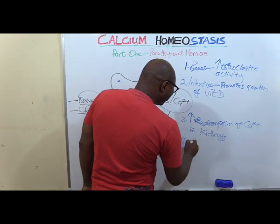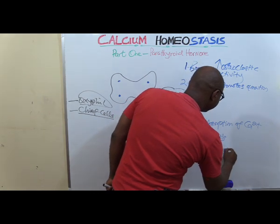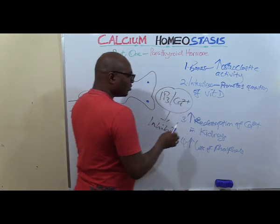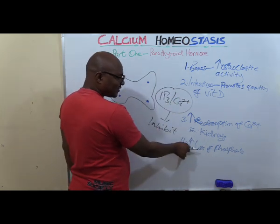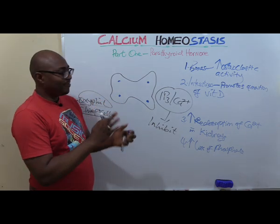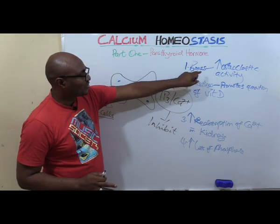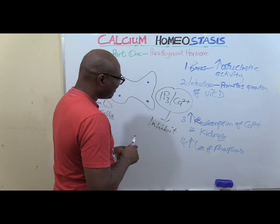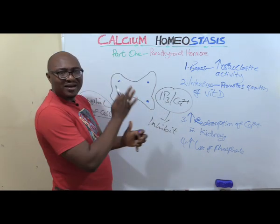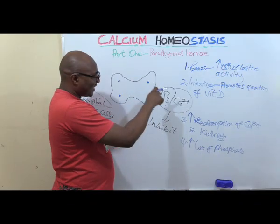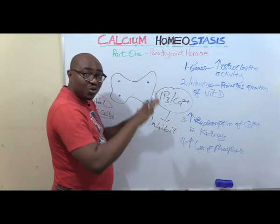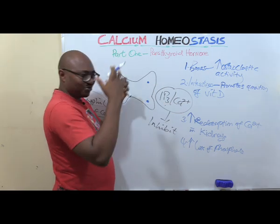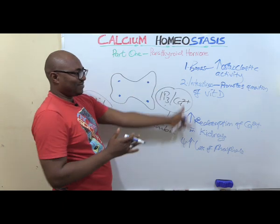PTH also increases the loss of phosphate from the kidneys. So while in the bones PTH releases both calcium and phosphate, in the kidneys it reabsorbs calcium but increases phosphate loss — creating a balance. The regulation works through negative feedback: when calcium is high, PTH secretion is inhibited; when calcium is low, the inhibition is lifted and PTH is stimulated, raising calcium levels through these mechanisms.